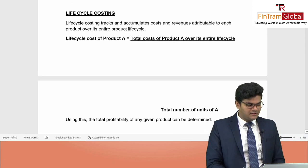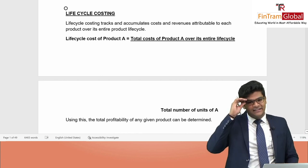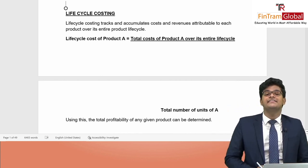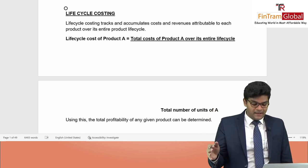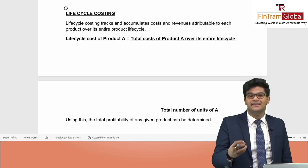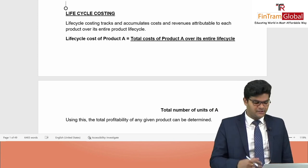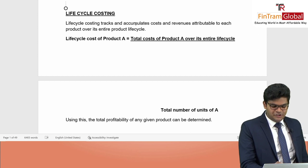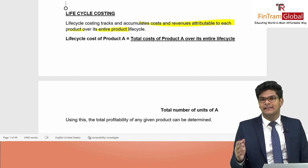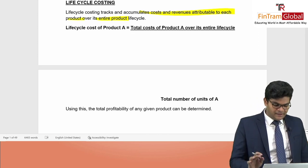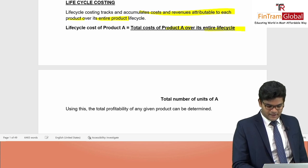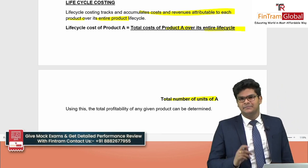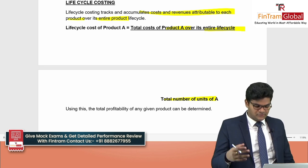We also looked at life cycle costing, which is straightforward. We take the total cost over the entire life cycle of the product and divide it by the total number of units to determine the price. Life cycle costing tracks and accumulates costs and revenues attributable to each product over its entire life cycle. The formula is: total cost of product A over its entire life divided by the total number of units of A.